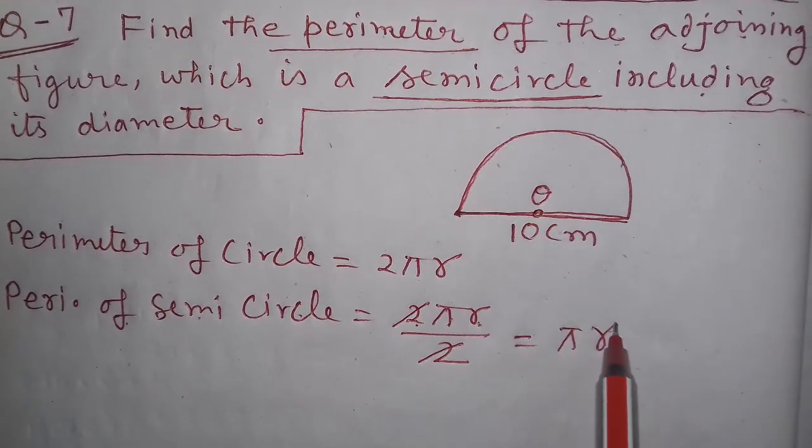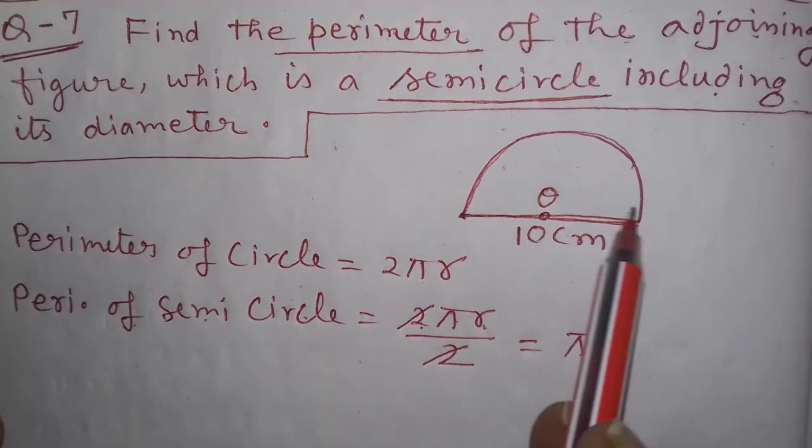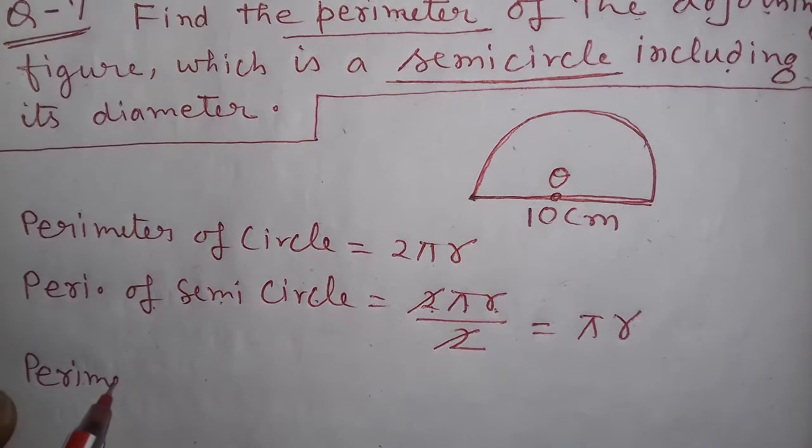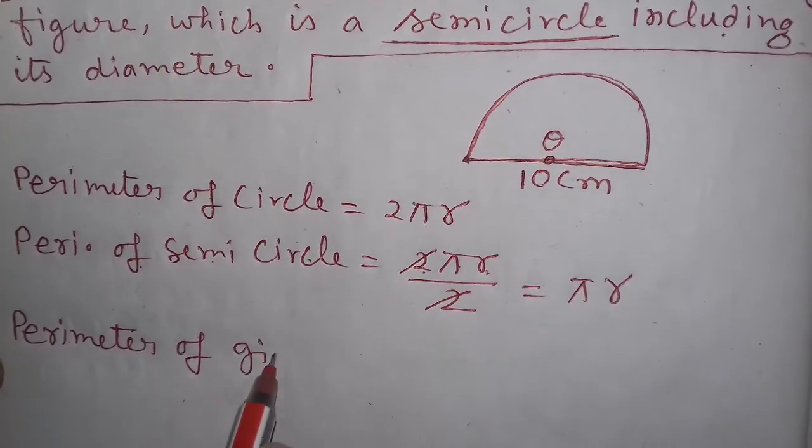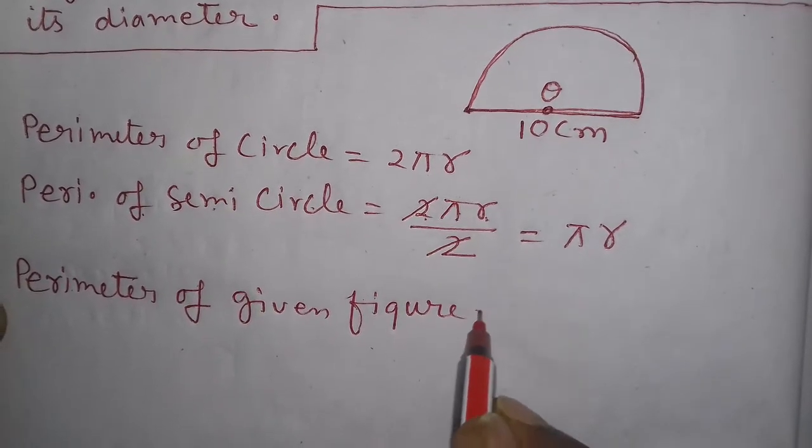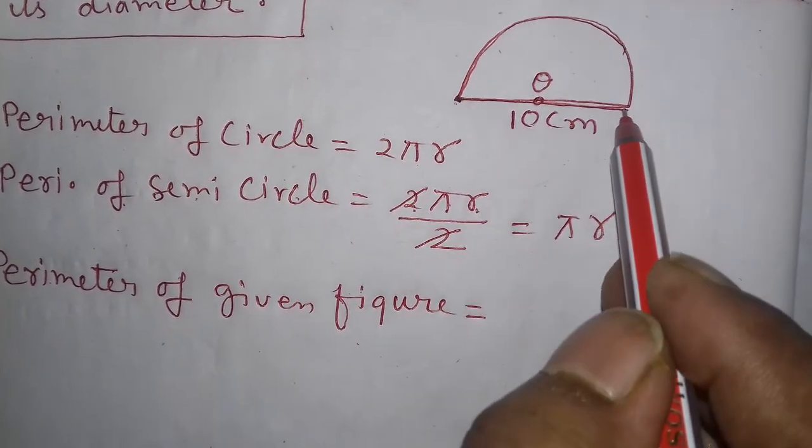But according to the given figure, the perimeter includes the diameter. So it's πr + d. Here, diameter d equals 10 centimeters.